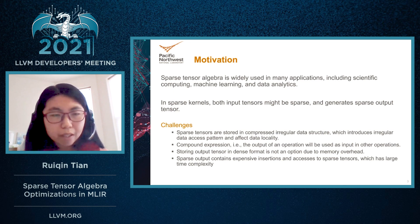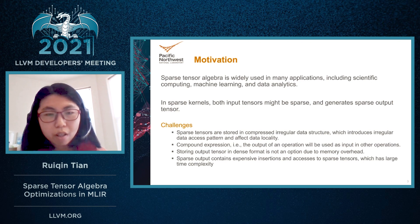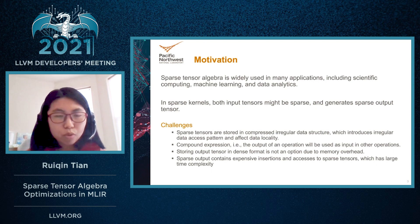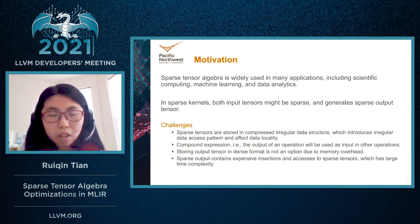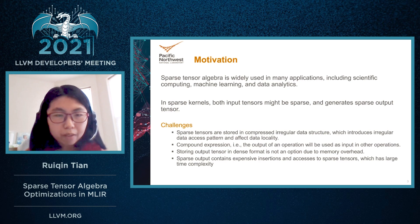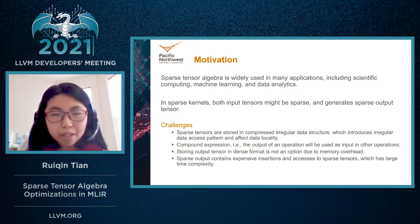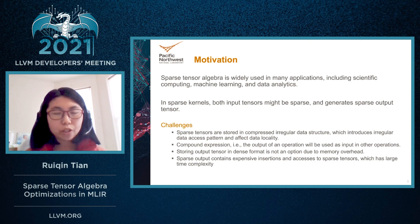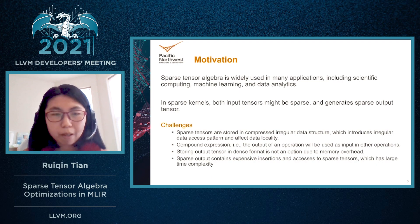Another challenge is that in compound expressions, the output of one operation will be used as input in other operations. So if we store the output in dense format, it will consume too much memory. On the other hand, sparse output contains expensive insertions and accesses to sparse tensors, which has large time complexity. So it is very challenging to support sparse computations, especially supporting sparse output.